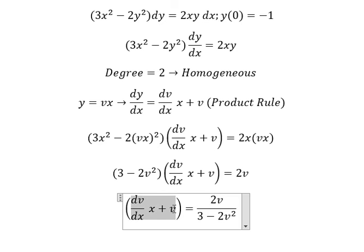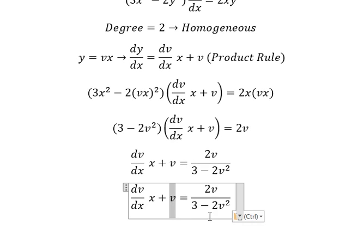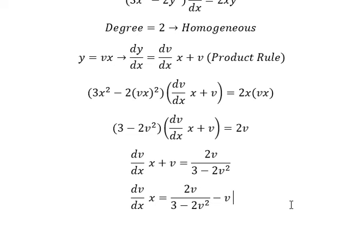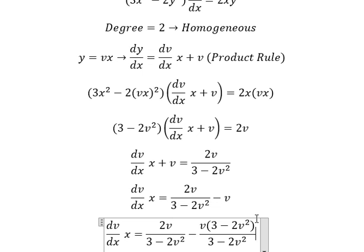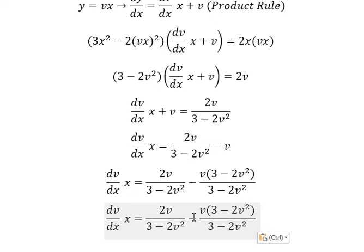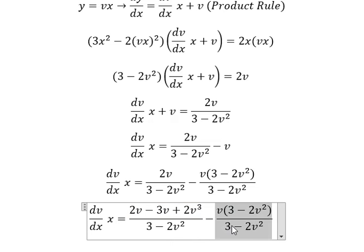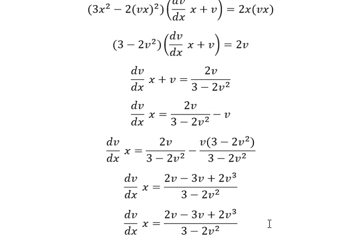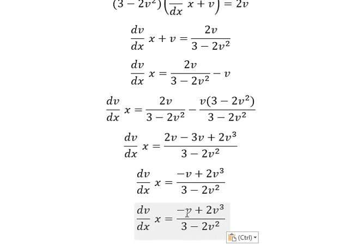Next we need to open parenthesis. I will put this one on the right. Now we do common denominator. We have negative v with number 3, so negative 3v — negative negative gives positive. We have negative 2v to the power of 3. Next, we put ds on the left and x on the right.